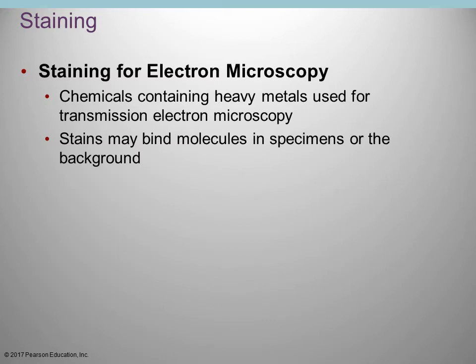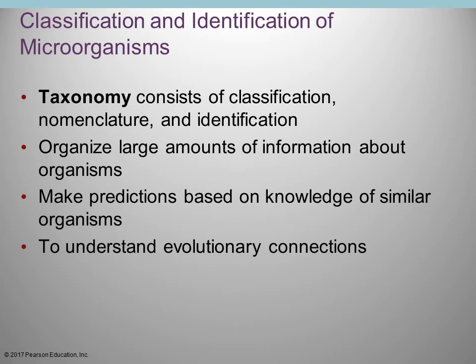For electron microscopy staining, the chemicals use heavy metals, particularly with transmission microscopy, and the preparation process kills the sample. How do we classify and identify microorganisms? Taxonomy is the specialized field dealing with classification — how you name them and figure out where a new organism fits in the whole classification scheme, and which other organisms it may be similar or related to. It helps you understand the evolutionary process.